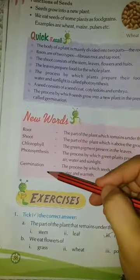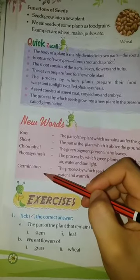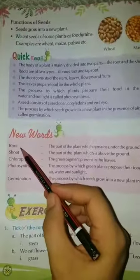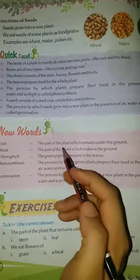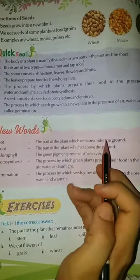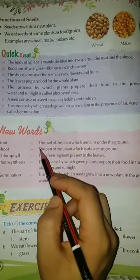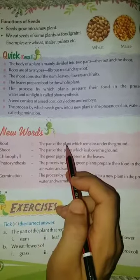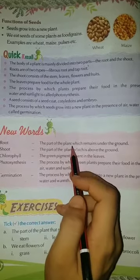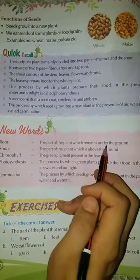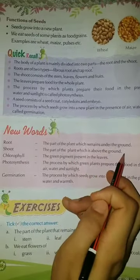Here are some terms which are introduced in this chapter. The first one is root — the part of the plant which remains under the ground. Root: the part of the plant which remains under the ground.